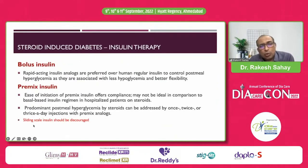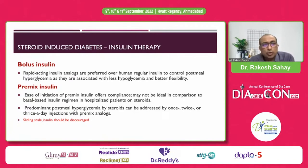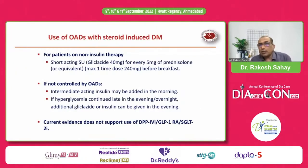An important point: don't use sliding scale insulin, as this causes confusion. You need to use basal insulin with appropriate doses of bolus insulin depending on the type and dose of steroid being used and the duration of treatment. We'll discuss tapering shortly.